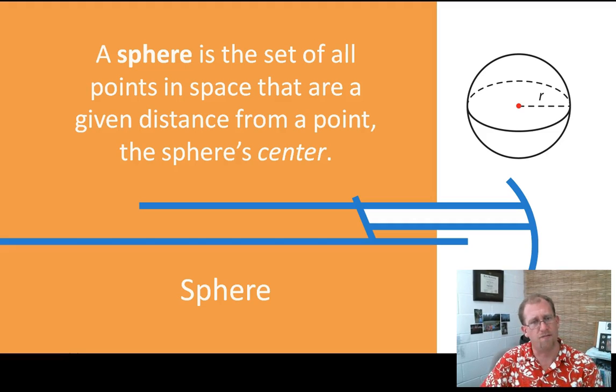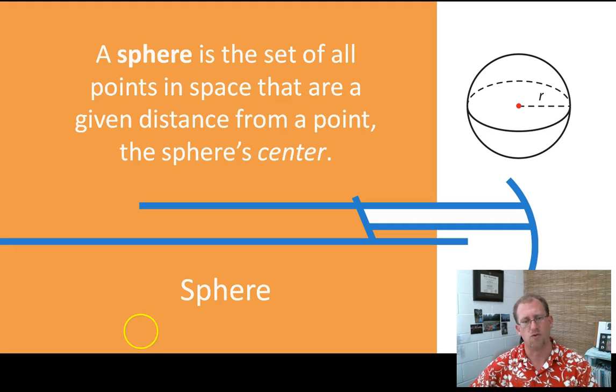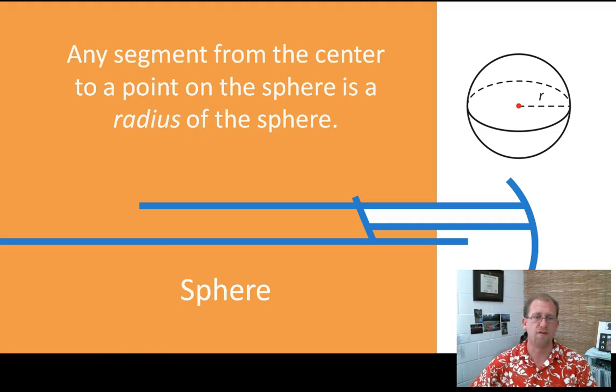A sphere is a very particular type of solid, the set of all points in space that are a given distance from a point, the sphere's center. Just like a circle is on a plane, it's flat, and it's everything that's the same distance from this point. Now if I take that exact same idea and I make it three-dimensional, I've got a ball, and that's a sphere. Any segment from the center of the sphere to any point on the sphere is the radius of the sphere. Just like a circle has a radius, so does a sphere.